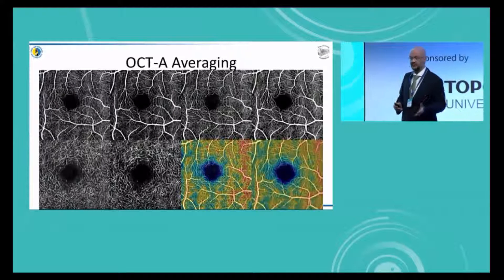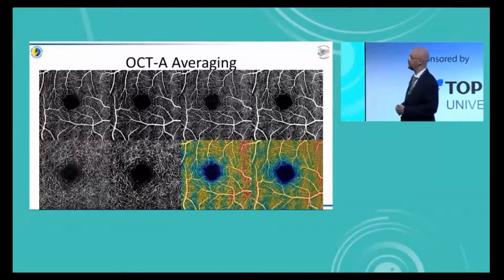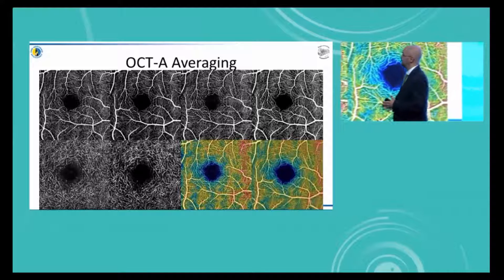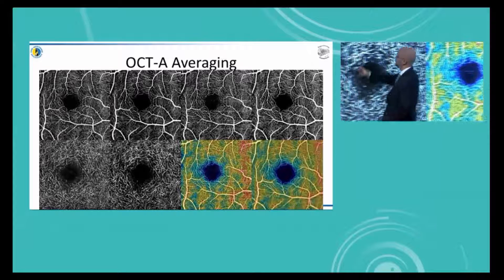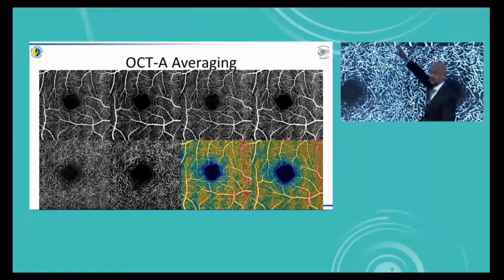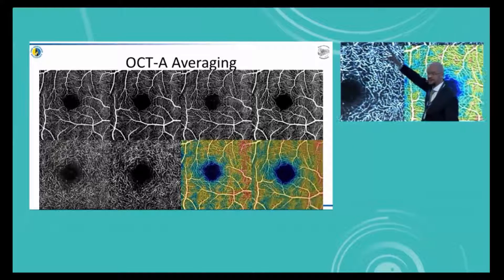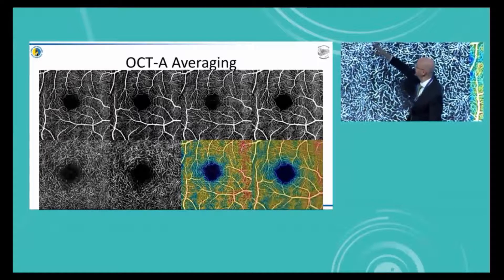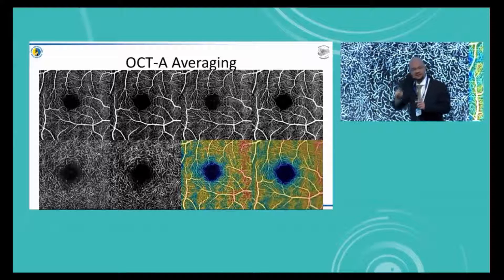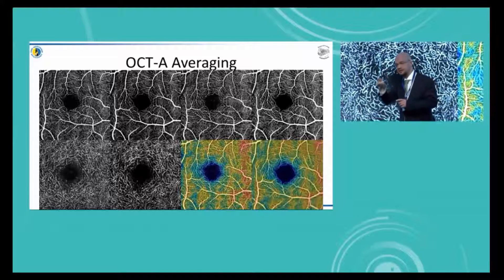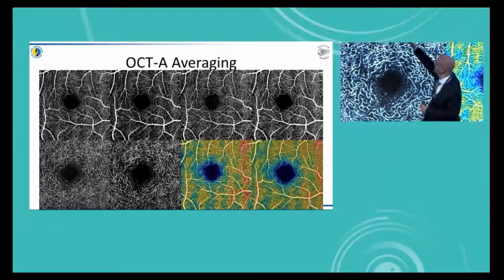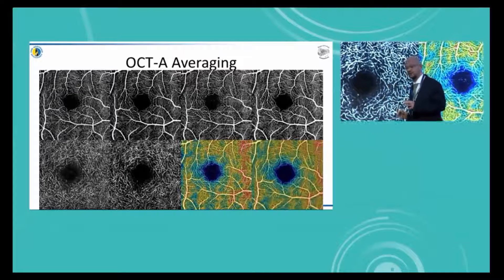Another possibility is averaging. If you take the same image three or four times in exactly the same space, you can get a dramatically improved result. This is very important because if you look at the foveal avascular zone on the raw image, it's not continuous — it has areas where the signal is lacking. But when you look at the averaged image, you have a continuous border across the entire foveal avascular zone.